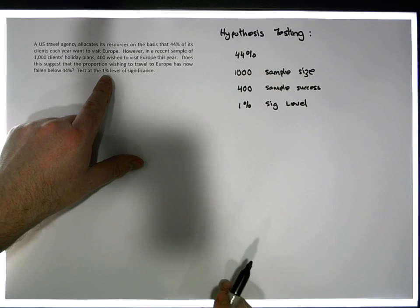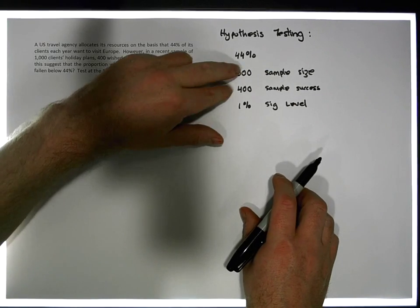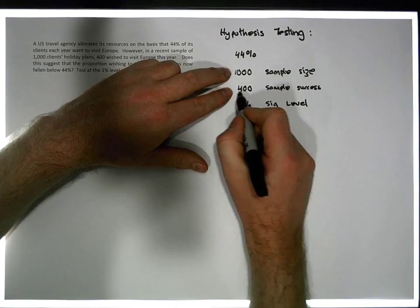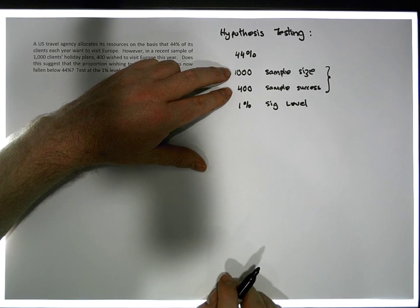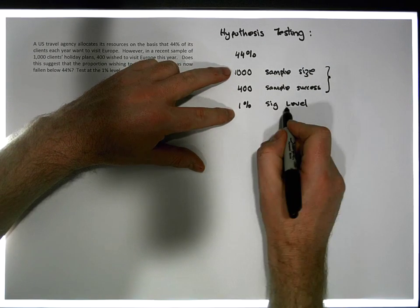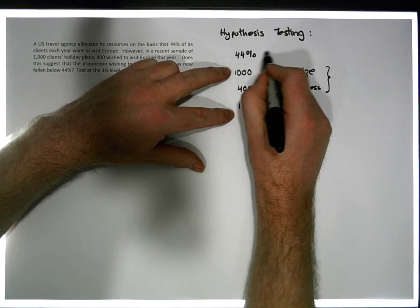So this is the information being provided. The key thing to know is that these two positions here, the 1,000 and the 400 are tightly coupled together. That's my sample information. Everything else, that's my significance level. So everything else must be just something to do with my population.